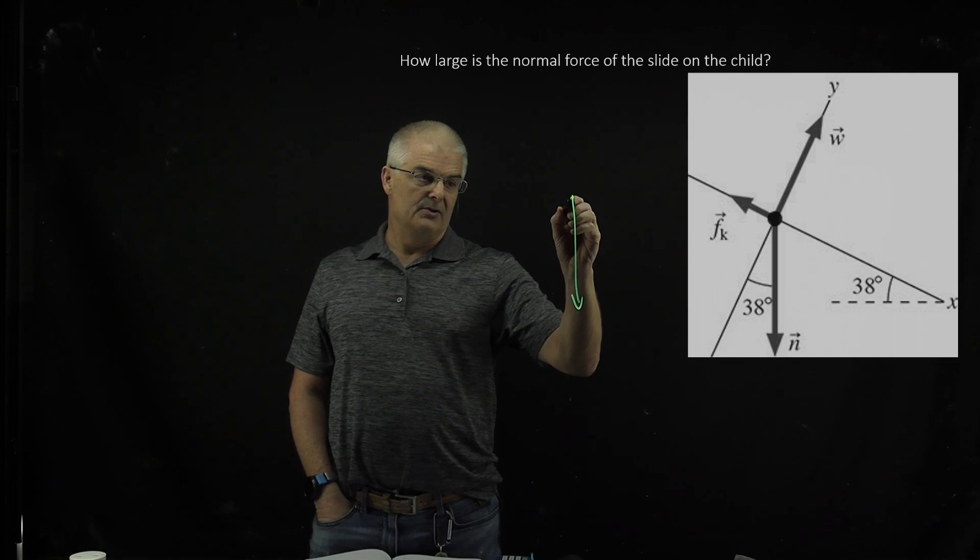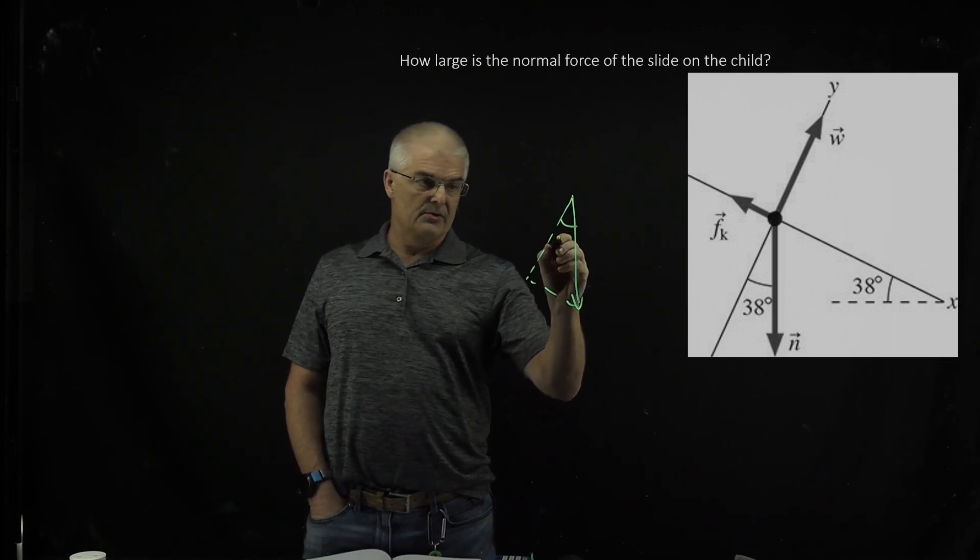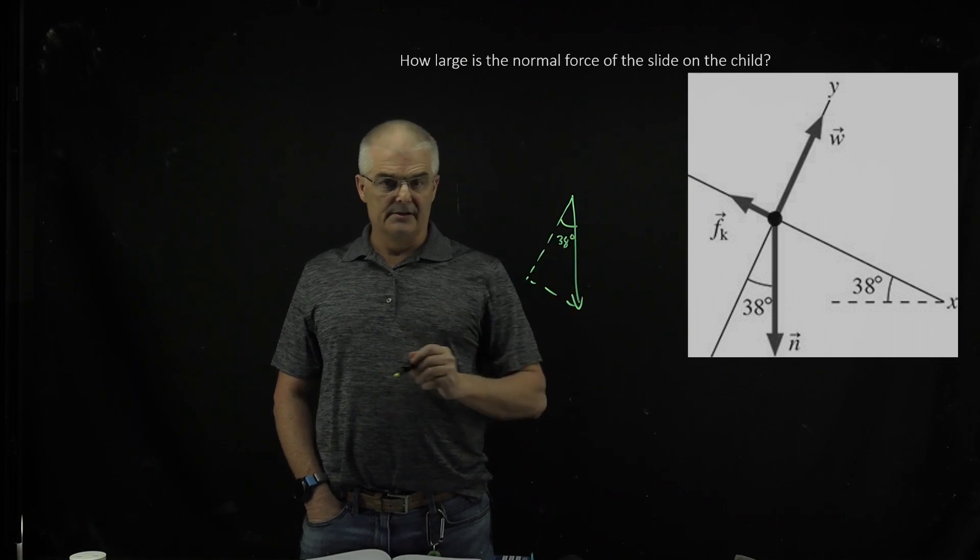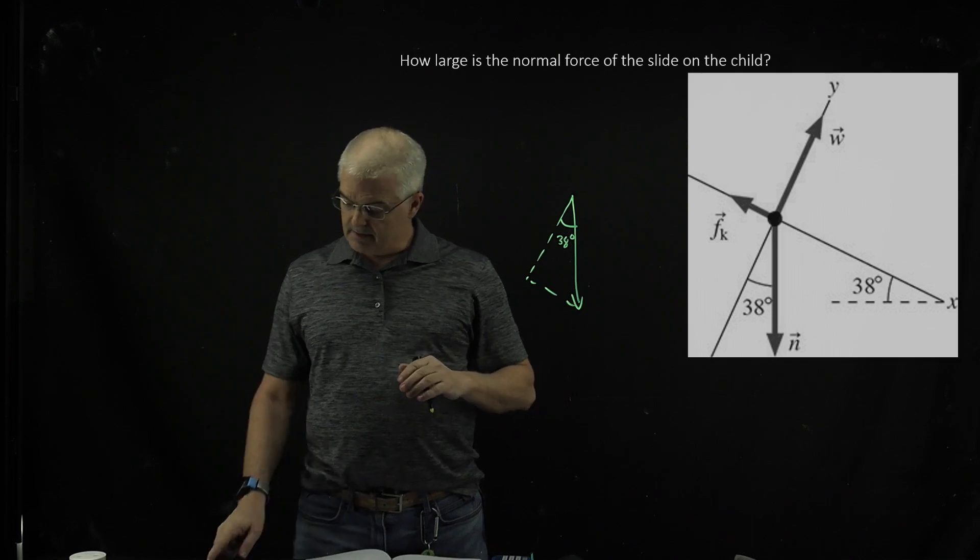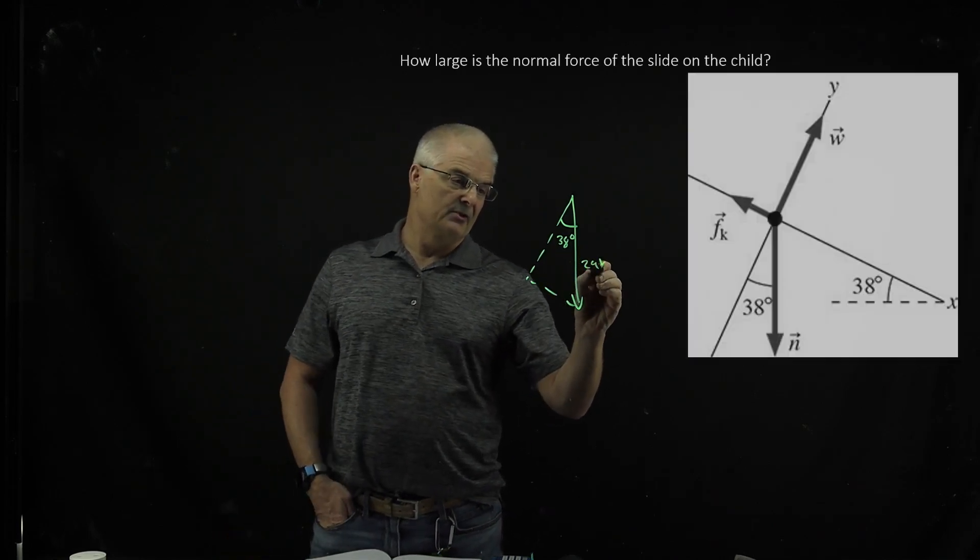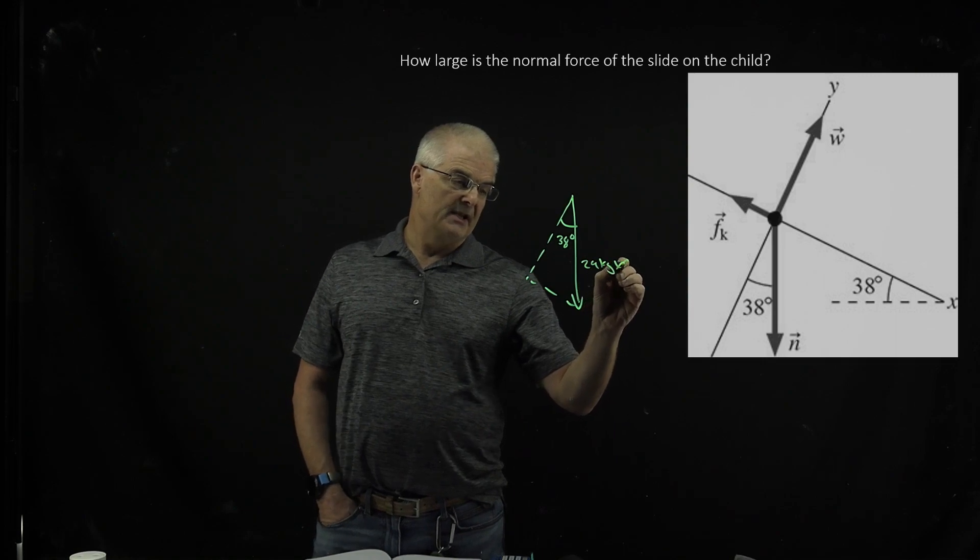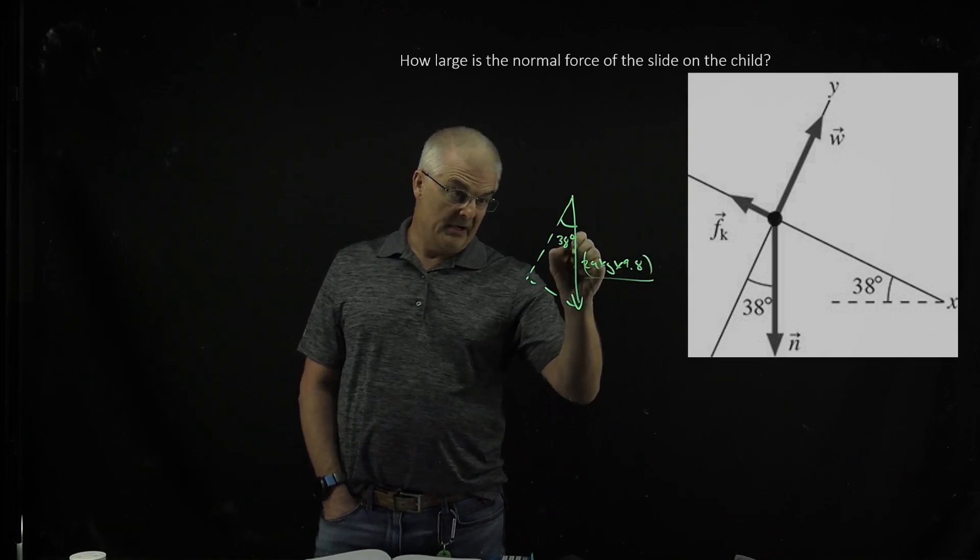This is the weight down, so if you draw the triangle here, and we know this is 38 degrees, we know this downward force is, I forgot what was our mass, 29 kilograms, so if this is 29 kilograms, you're going to times that by 9.8, right, to give you your hypotenuse of your triangle.